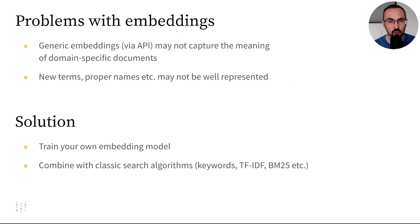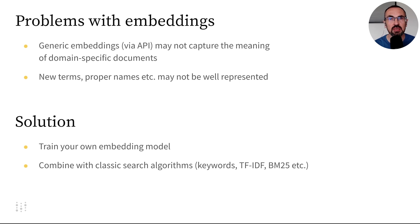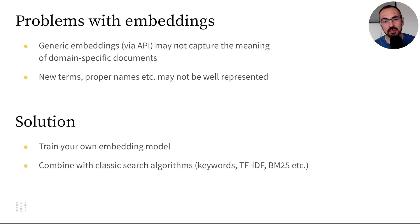Sometimes embeddings don't work very well. Embeddings may struggle with domain-specific data, like biology or chemistry, as well as new terms or proper names. Solutions include training your own embedding model or combining embeddings with classic search algorithms such as TF-IDF or BM25. Consider learning about these methods if you're dealing with complex domain-specific data.